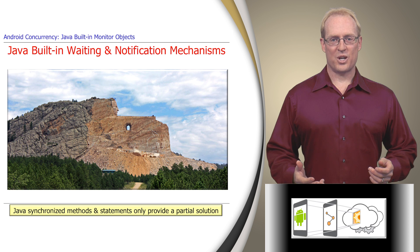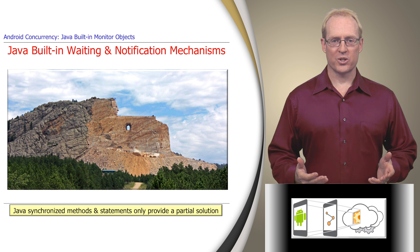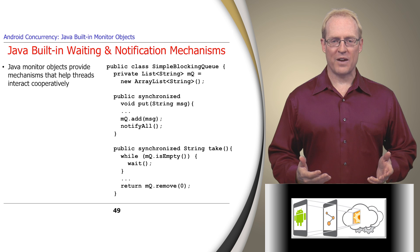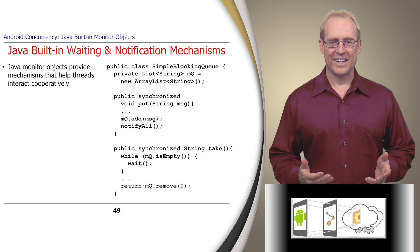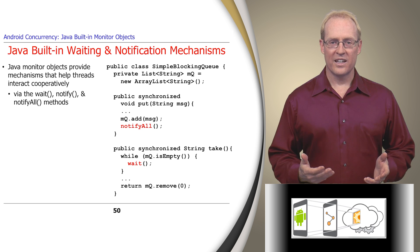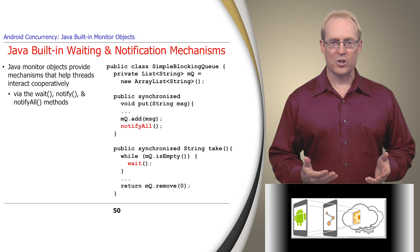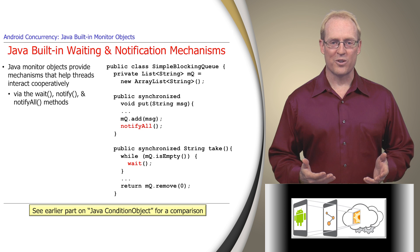Synchronized methods and statements are only a partial solution. Therefore, Java's built-in monitor objects also provide waiting and notification mechanisms that help threads cooperatively schedule their interactions. Each built-in monitor object inherits the wait, notify, and notifyAll methods from the Java Object class, which are similar to the await, signal, and signalAll methods defined by Java condition objects described in an earlier video.